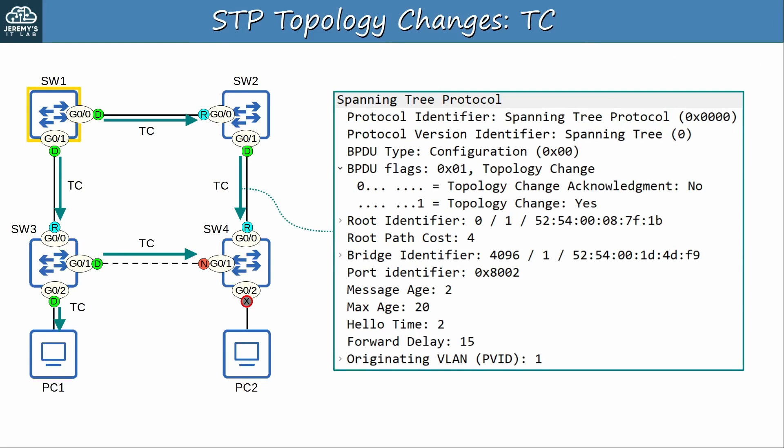But before that, here's a quick look at a configuration BPDU with the TC flag set. This is a configuration BPDU, not a topology change notification BPDU. To repeat, there are two types of BPDU: configuration and TCN. TCN BPDUs are only used to inform the root bridge of a topology change. Topology change acknowledgement and topology change, on the other hand, are configuration BPDU flags. The TCA flag is used to acknowledge receipt of a TCN BPDU, and the TC flag is used to tell all switches in the LAN that there has been a topology change and they should rapidly age out their known MAC addresses. As you can see here, the TC flag has been set in this configuration BPDU sent from SW2 to SW4.